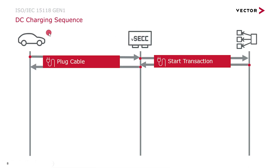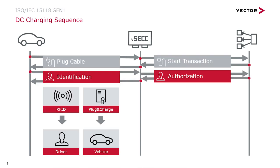Let's look in more detail at a DC sequence as an example. The car arrives, the cable is plugged in, and then a start transaction is handed over to the backend so it is already aware that a charging session has started. This is acknowledged back to the vehicle. Secondly, identification starts — whether it's RFID or certificate-based Plug and Charge — which allows the backend to authorize the user or vehicle.